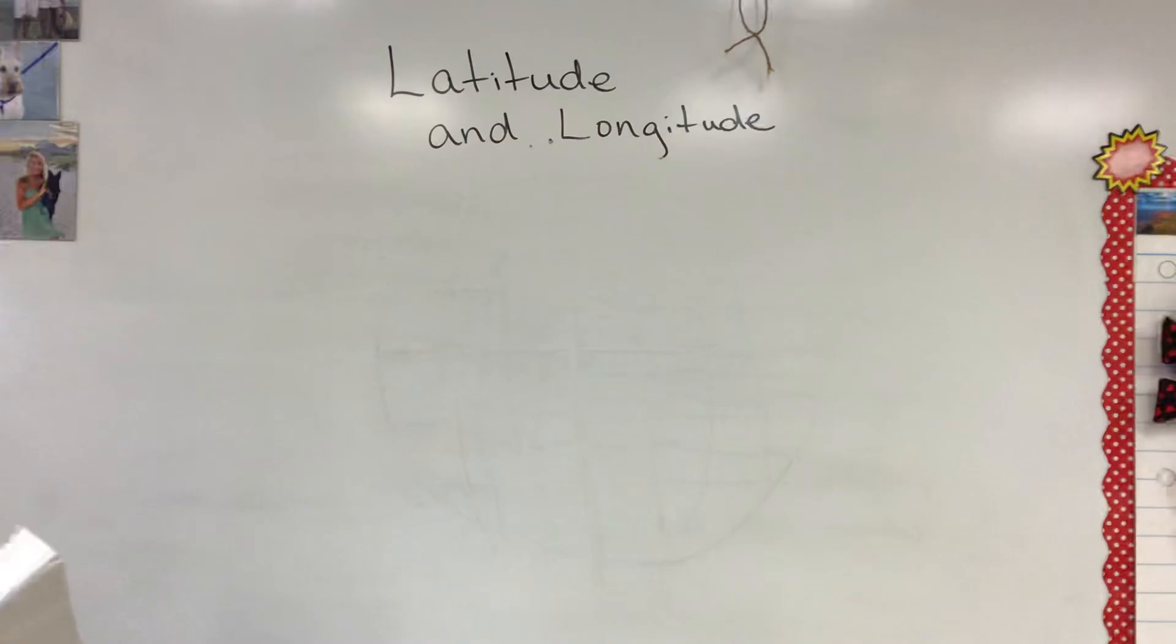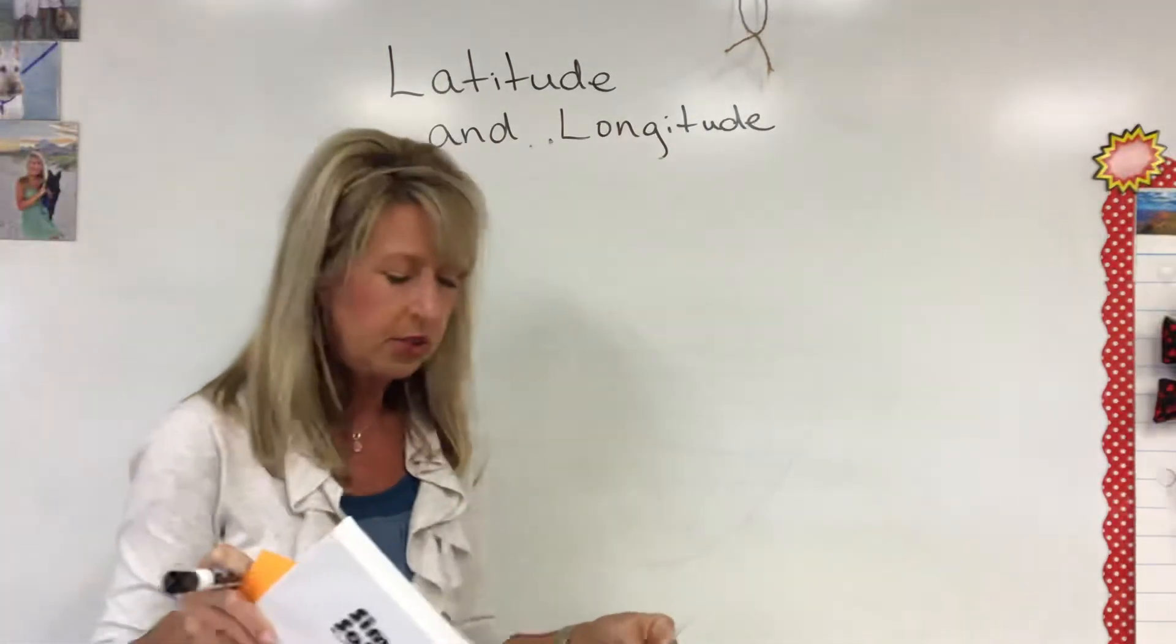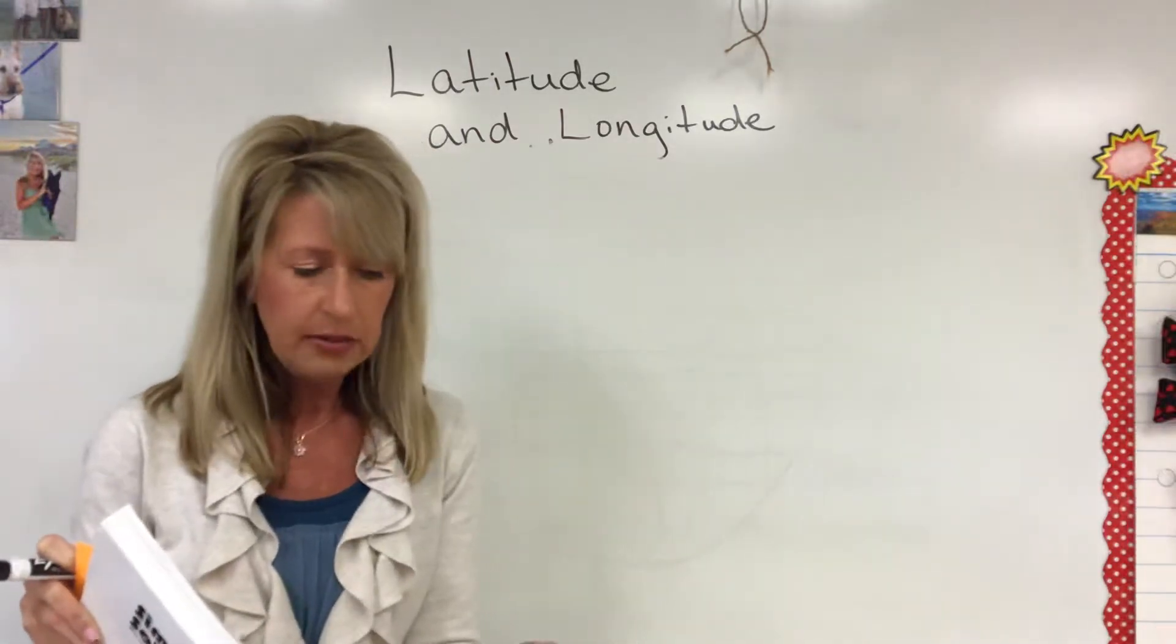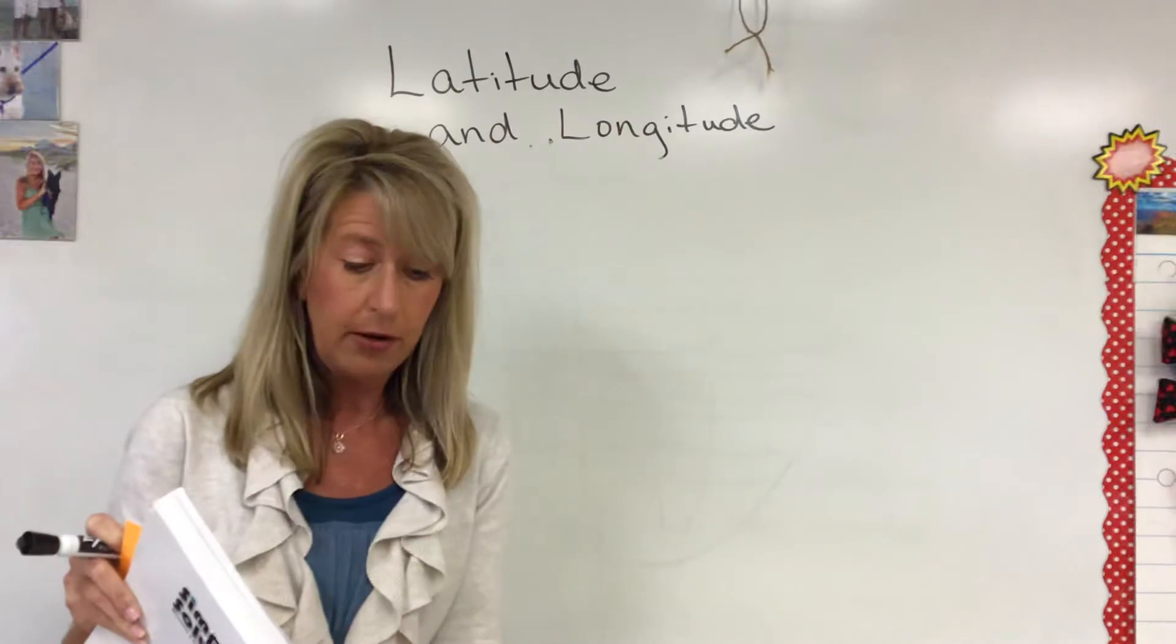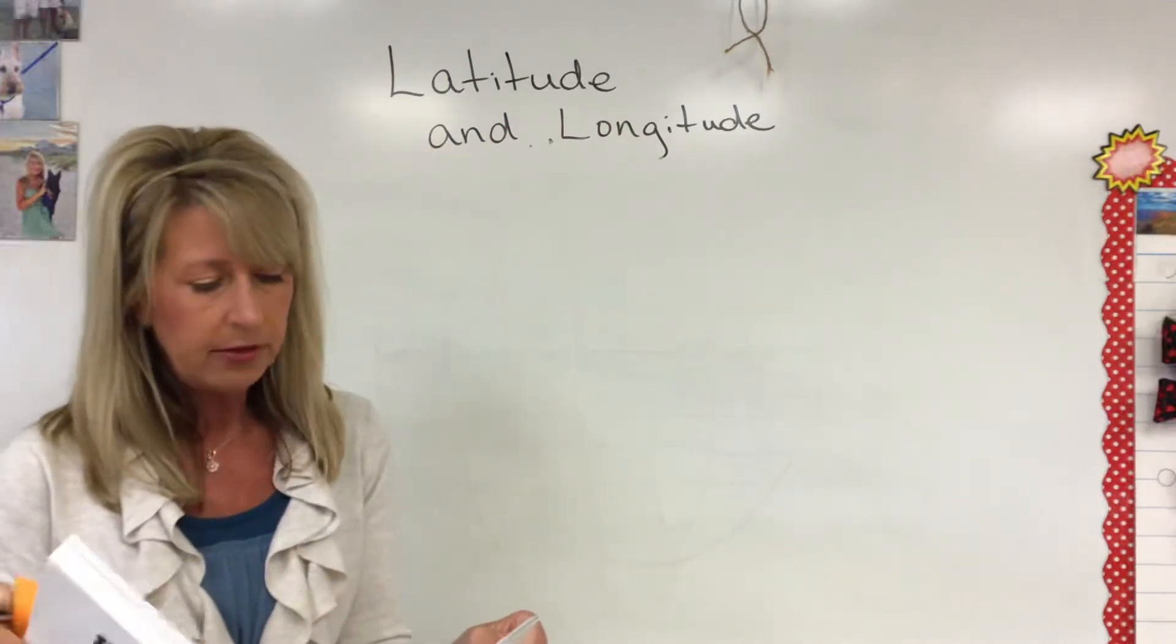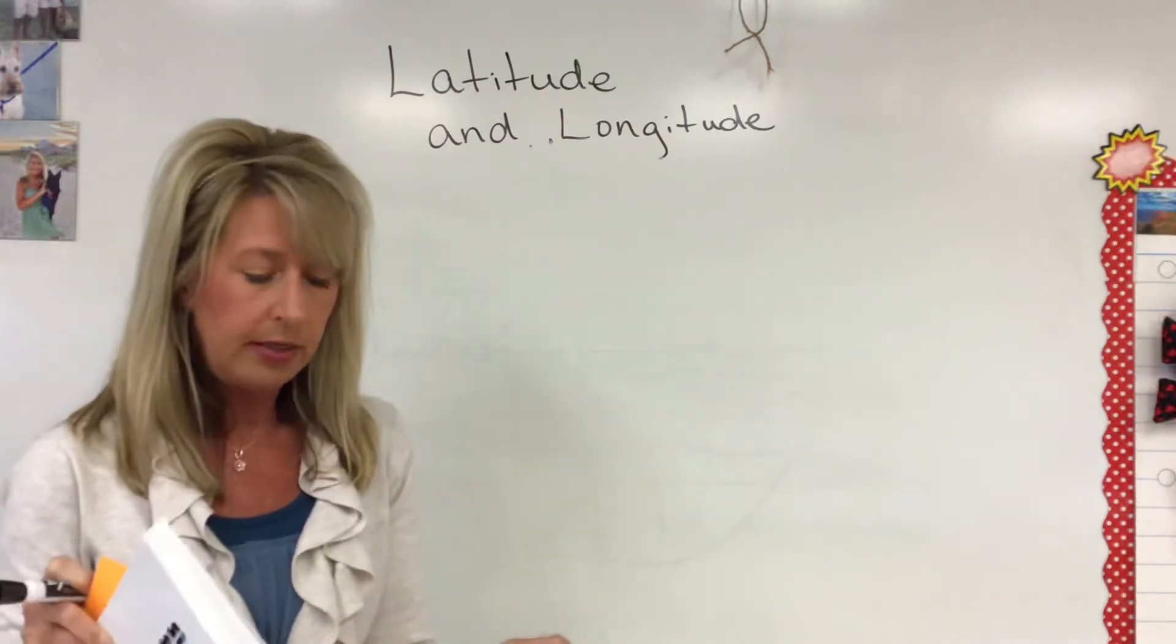Maps and globes use imaginary lines of latitude and longitude to show the positions of different places. Latitude lines are parallel horizontal lines. Latitudes are also called parallels. The parallel at the center of the globe is the equator. The equator is located at zero degrees. Parallels above the equator are labeled in degrees north and those below are labeled degrees south.